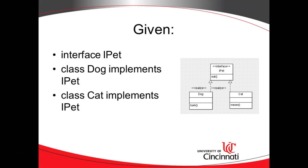Here's our example. Let's say we have an interface called IPet. Remember, an interface is just a list of methods, not the behaviors of those methods. Any pet — just about any pet — is going to have to eat, whether it's a dog or a cat or something else. So Dog will implement IPet and Cat will implement IPet, because both Dog and Cat have to eat; they're under contract to define what the behavior of eat is. Now, a Dog can bark and a Cat can meow — a Dog cannot meow and a Cat cannot bark. So bark lives in the Dog class and meow lives in the Cat class, because eat applies to both, but not bark and meow.